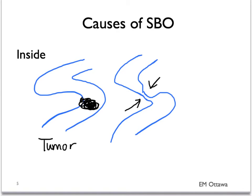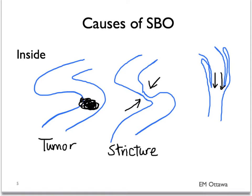narrowing or strictures, intussusception where one part of the bowel is telescoping into another part of the bowel. Also, inflammatory bowel disease such as Crohn's disease can also lead to obstruction.